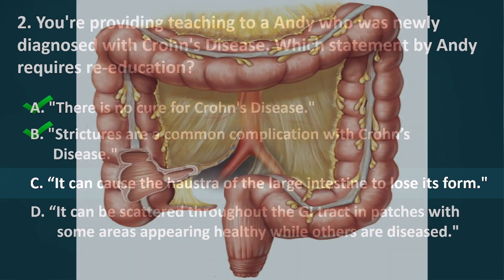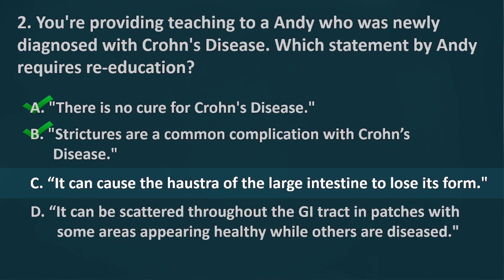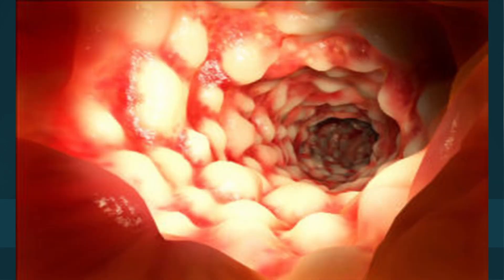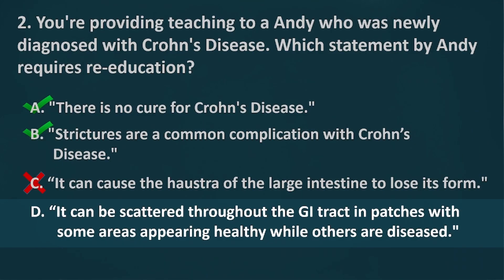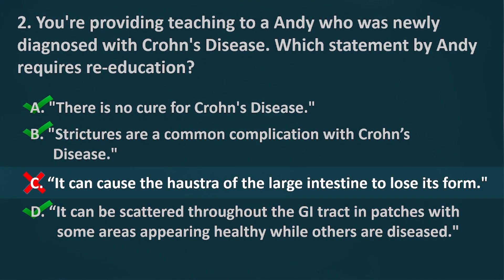Haustra are saccules in the colon that give it a segmented appearance. These saccules are not deformed in patients diagnosed with Crohn's disease, making option C an incorrect statement. Crohn's disease can be scattered throughout the GI tract in patches, with some areas appearing healthy while others are diseased, making option D a correct statement. Therefore, the correct answer is Letter C.